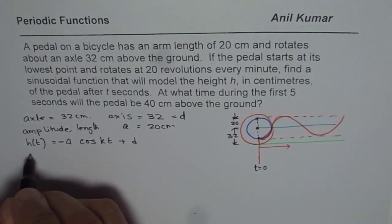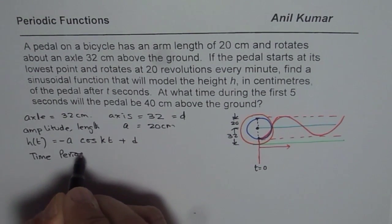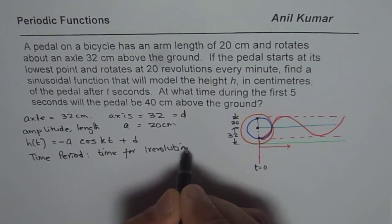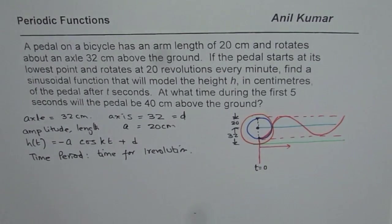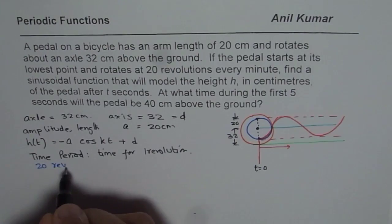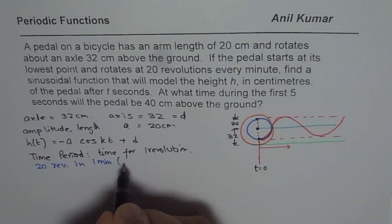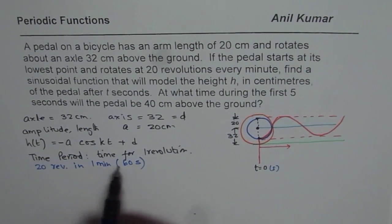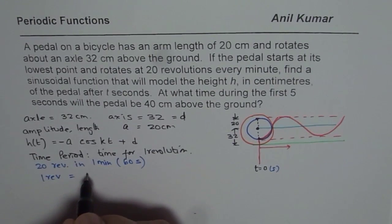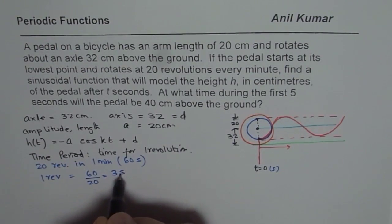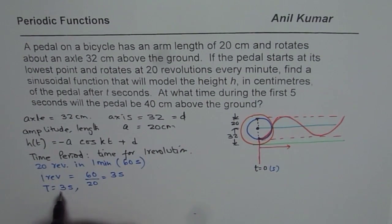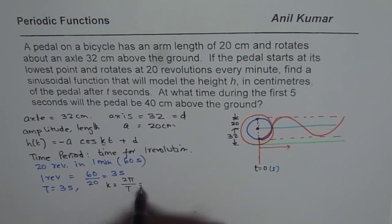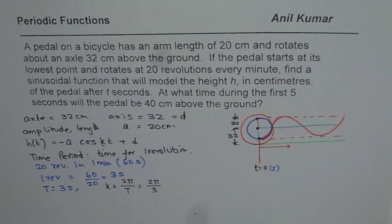To find k, we need to find the time period. The time period is the time for one revolution. We are given 20 revolutions every minute, which is 60 seconds. So 20 revolutions in 60 seconds means one revolution takes 60 divided by 20, which equals 3 seconds. So the time period T is 3 seconds. Therefore k equals 2π divided by T, which is 2π over 3.